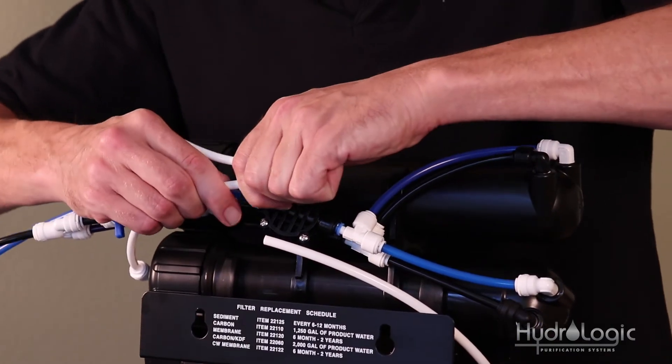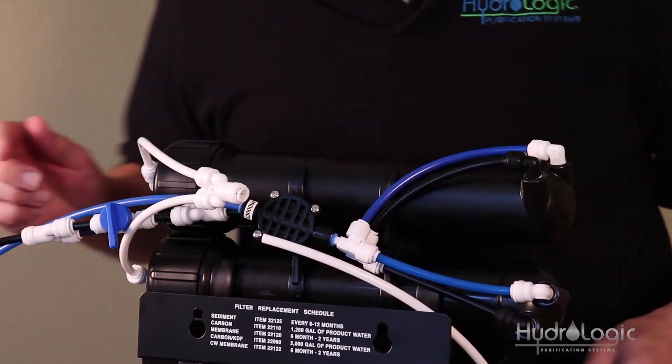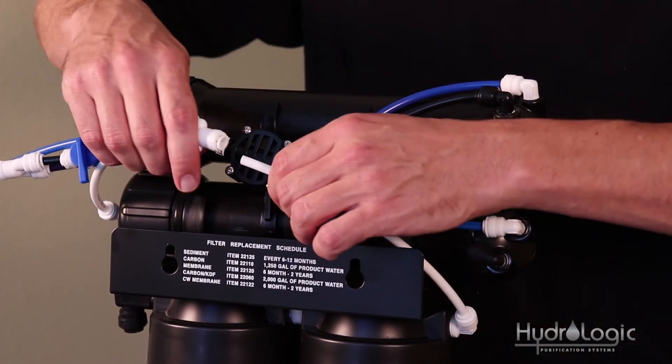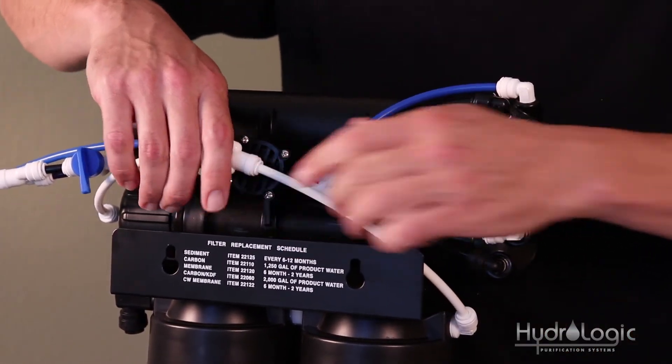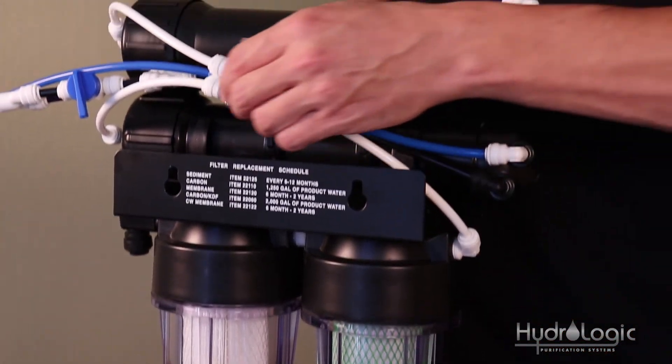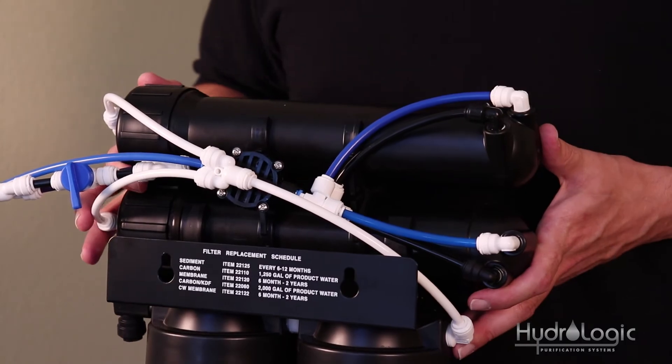Take this tubing from your bottom membrane and push it into the splitter. So, you're essentially joining the two membranes together. And then, what's left over from this quarter-inch tubing coming from your carbon side, that goes into the bottom of the splitter. That way, when the water travels through your system and comes through the carbon side, it splits off and it goes to both membranes simultaneously.